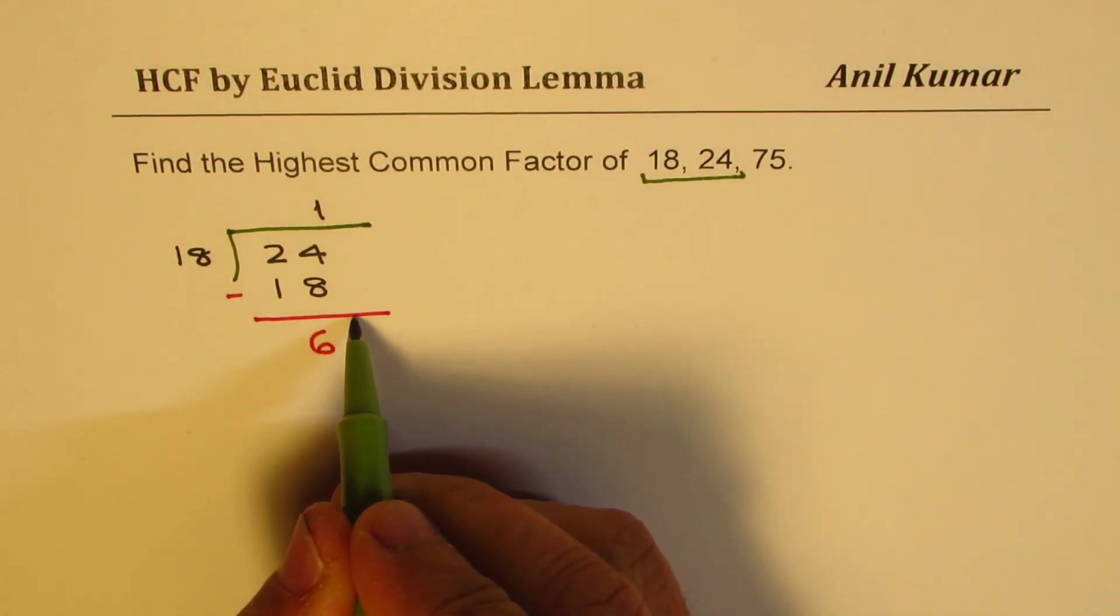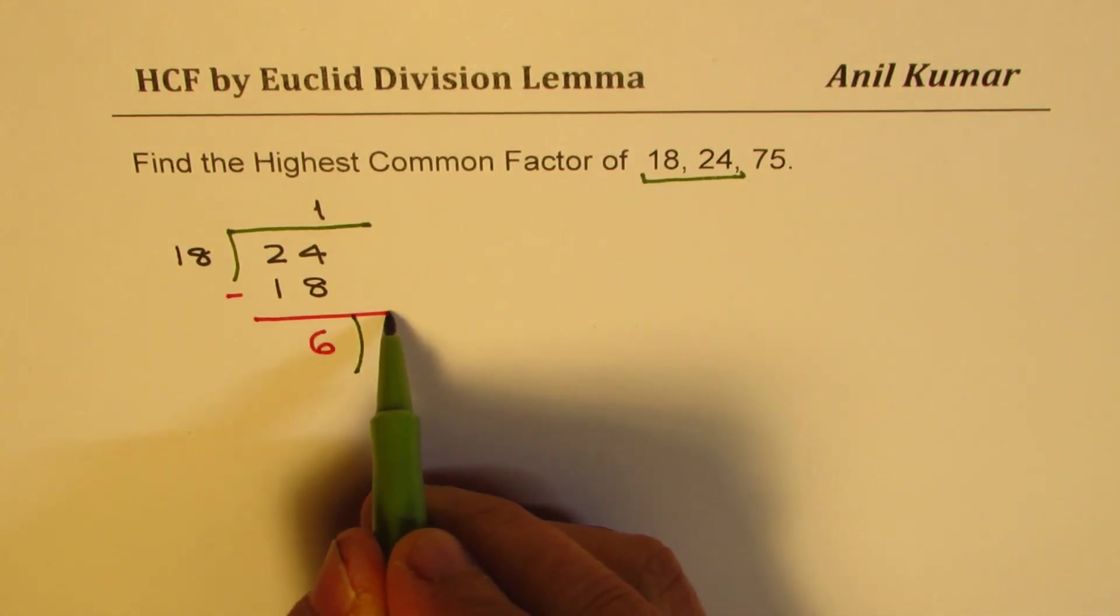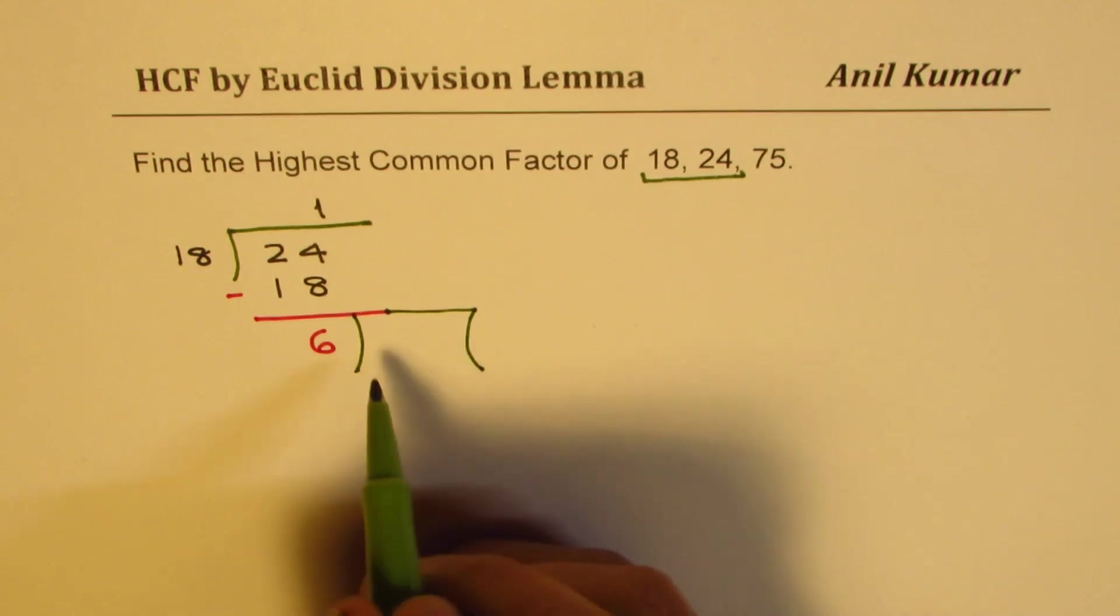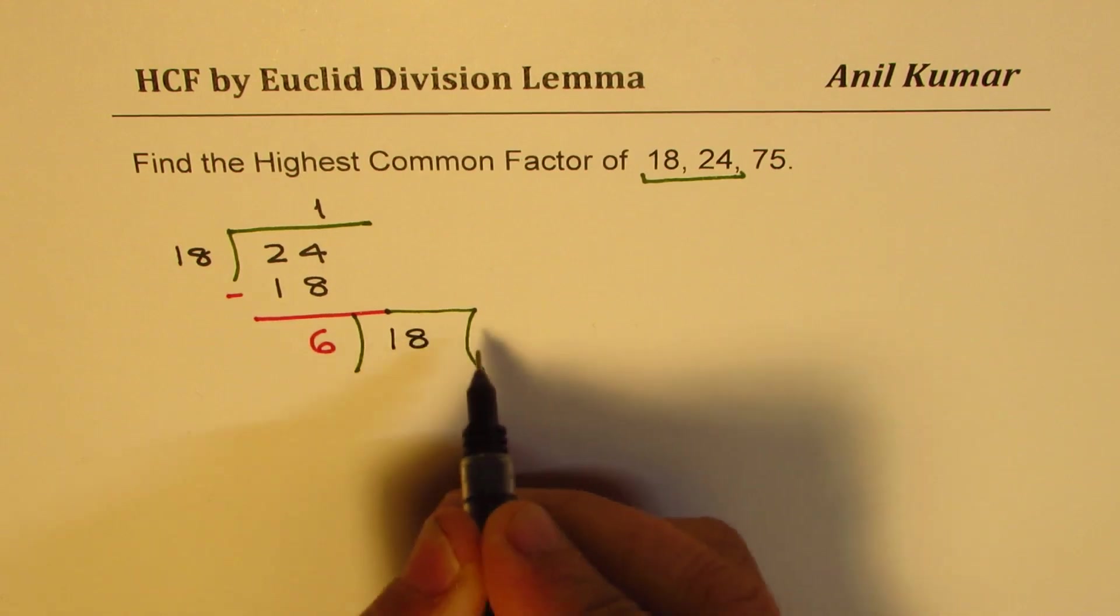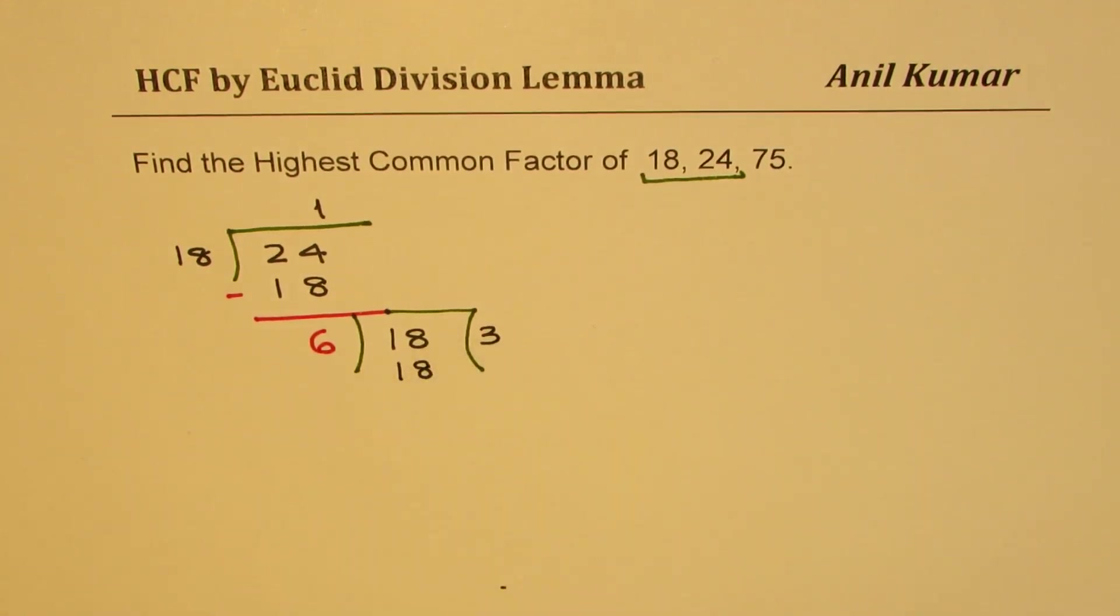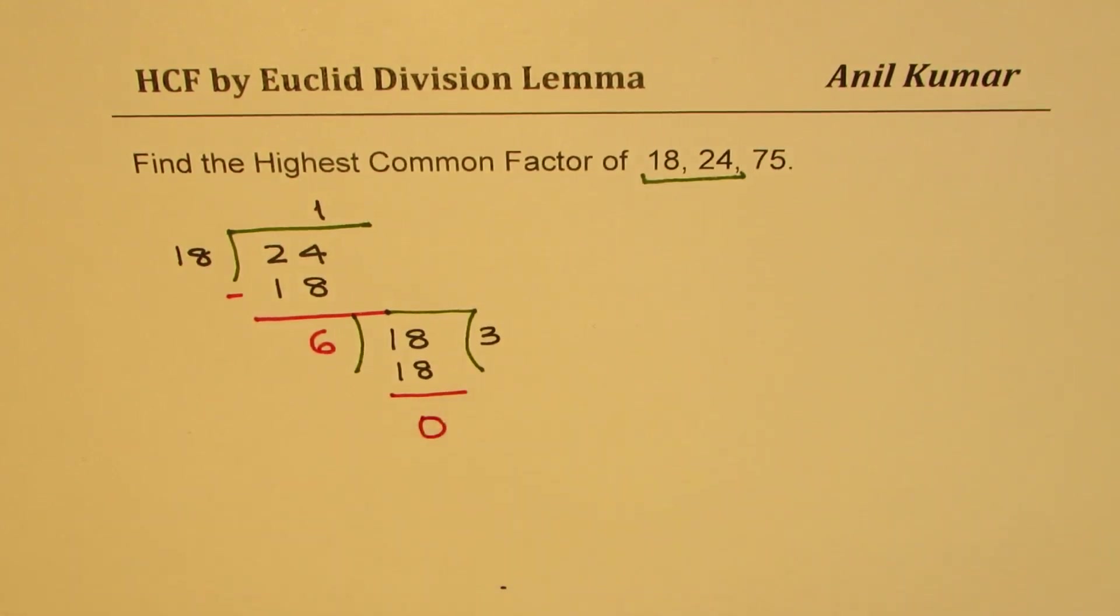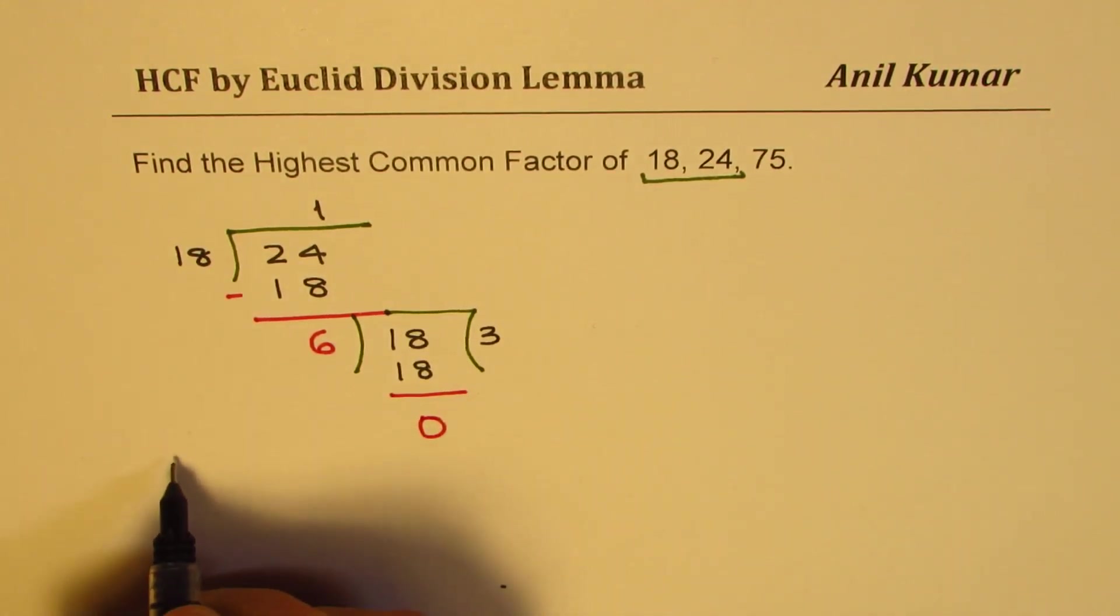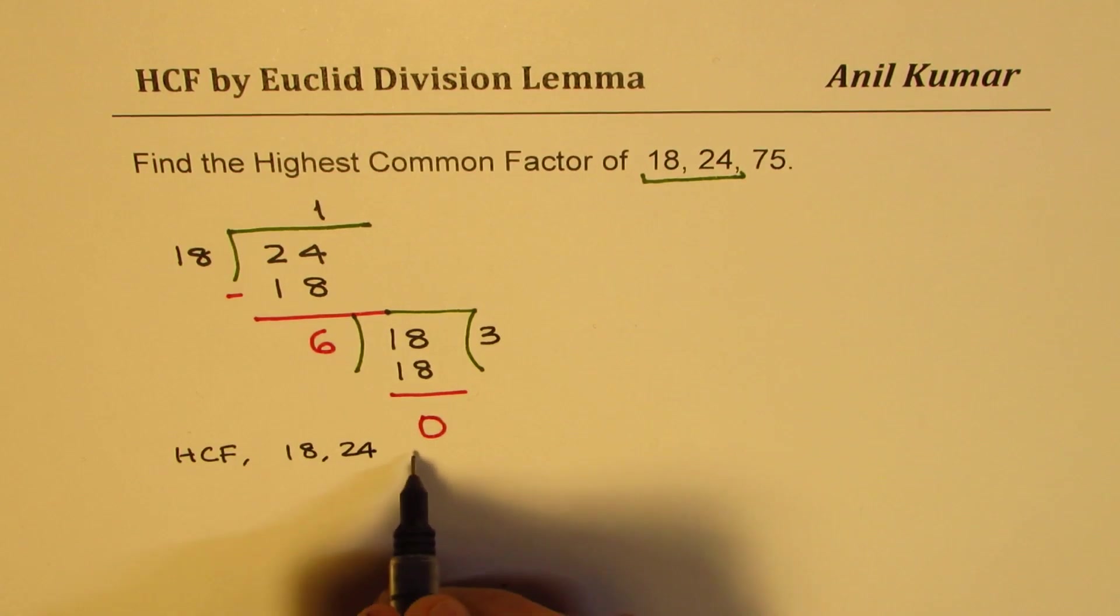We'll continue with this process and now we'll divide 18 by 6. Now 6 times 3 is 18 and the remainder which we get here is 0. That means the highest common factor of 18 and 24 is 6.